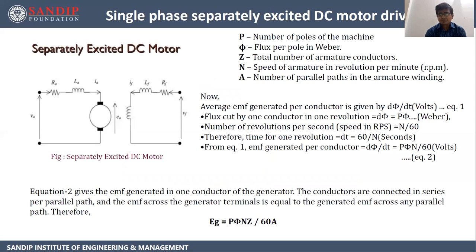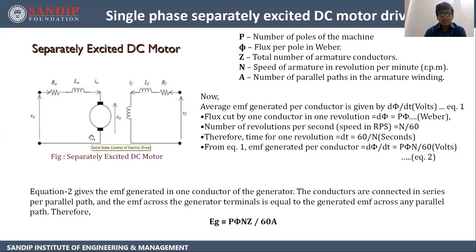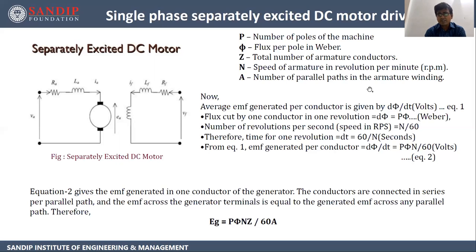Next is single phase separately excited DC motor drive. In a separately excited DC drive, the field winding and armature winding are not directly connected. We give supply to the field winding, and due to mutual inductance the armature winding gets supply and gets excited. This is a separately excited DC motor. Let's see a few equations related to this. P denotes number of poles, phi denotes flux per pole in Weber, Z denotes total number of armature conductors, N is speed of armature in RPM, and A is number of parallel paths in the armature winding.